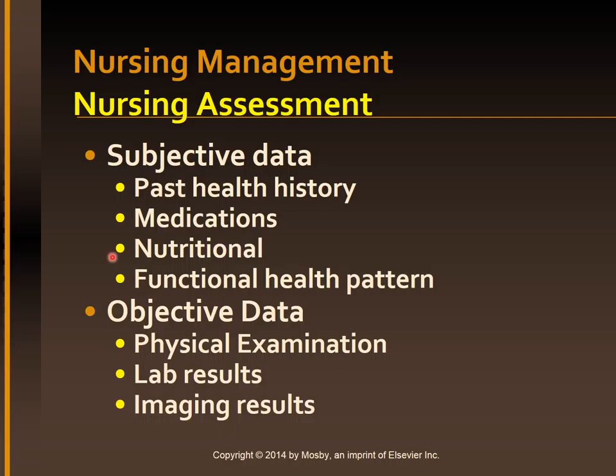Assess for any dull right upper quadrant or epigastric pain. Numbness, tingling of extremities, or pruritus. Any history of impotence or amenorrhea.